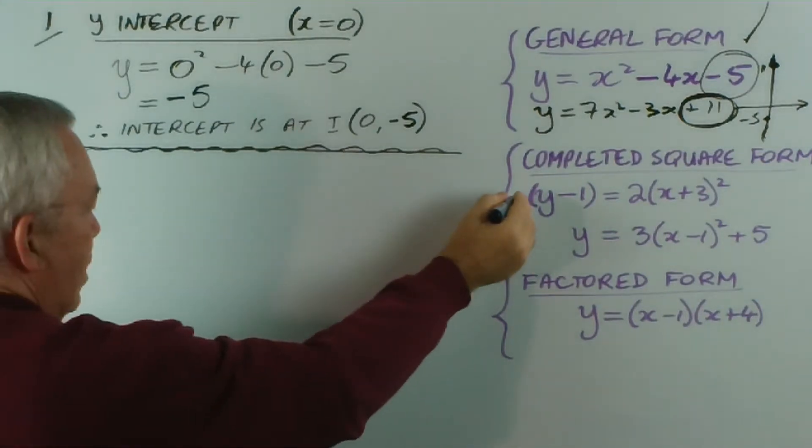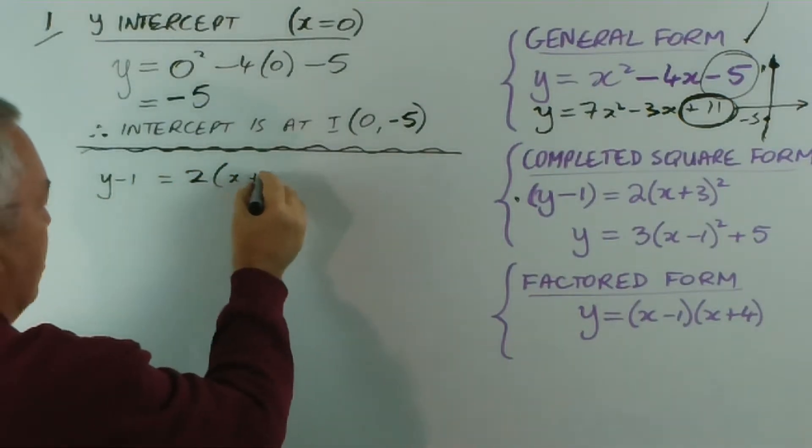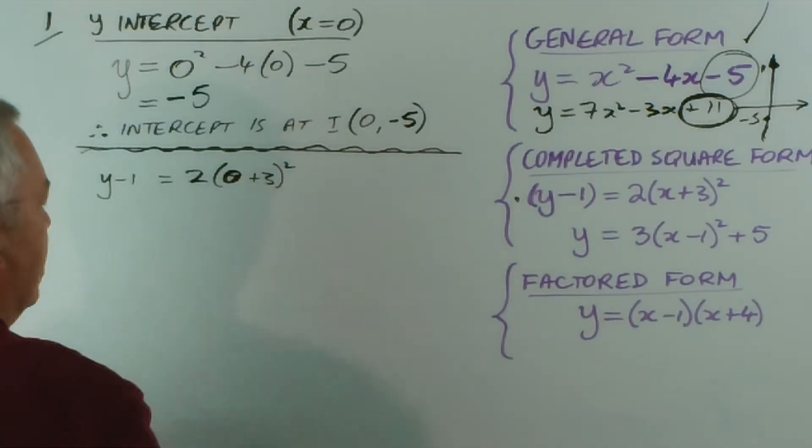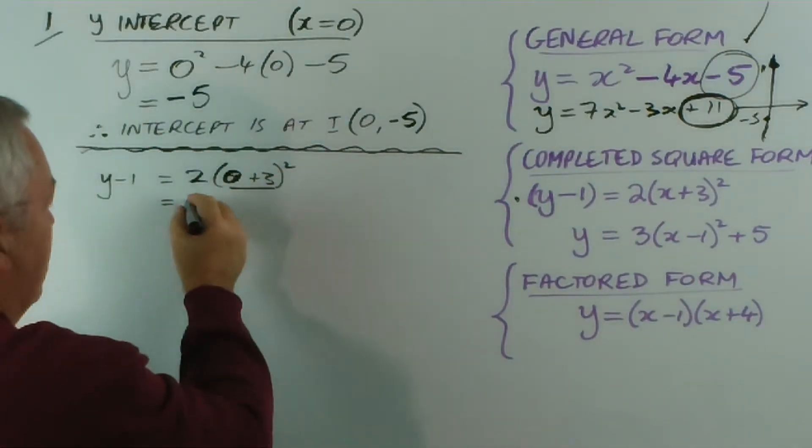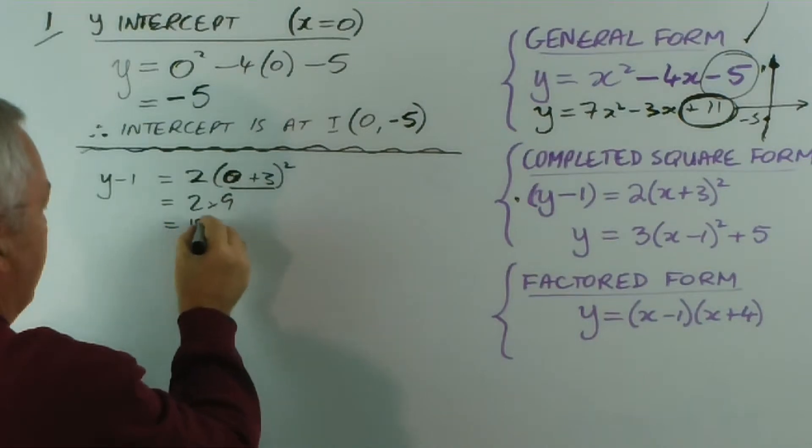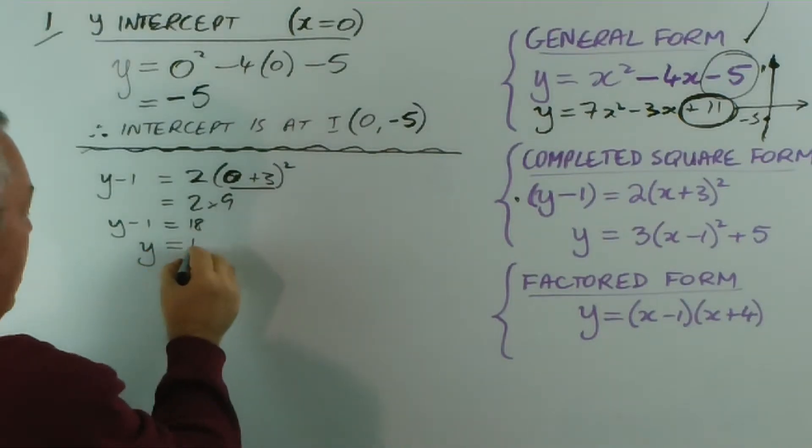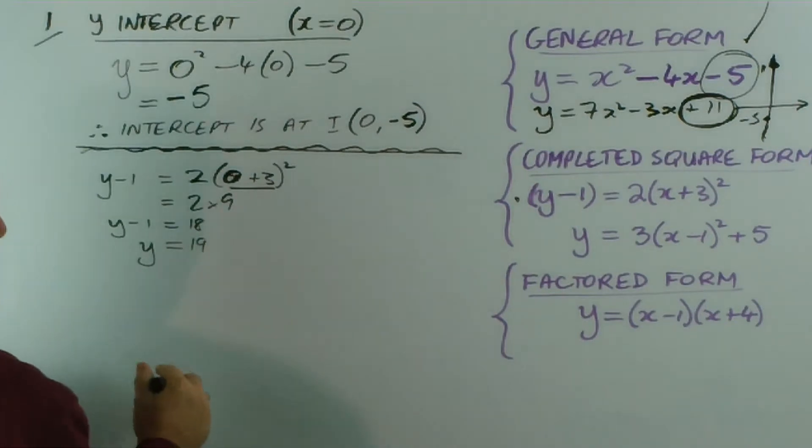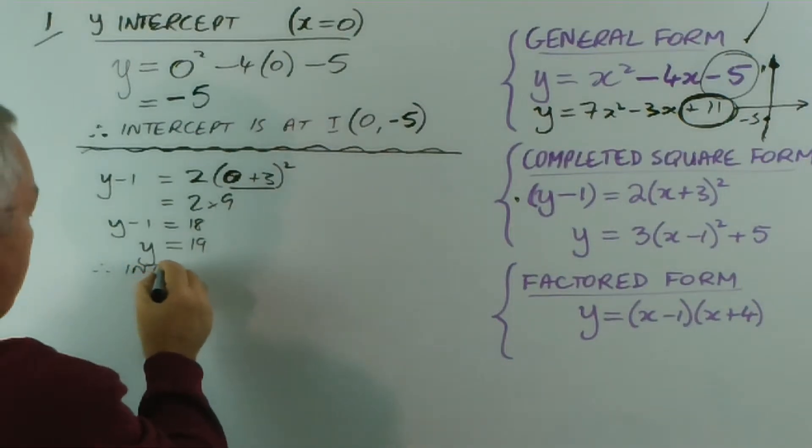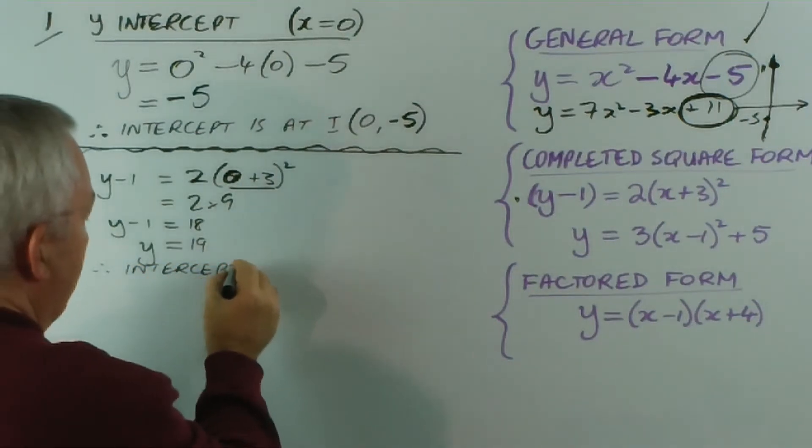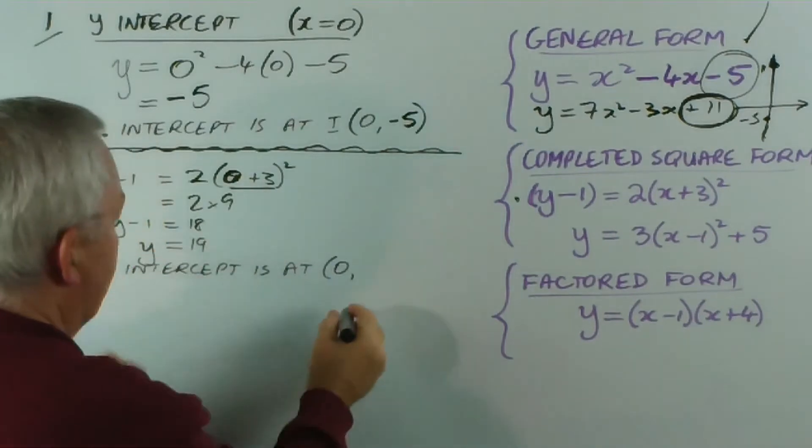If we substitute x equals zero in these, in the first occasion, this one, we will get y minus one is two lots of zero plus three squared. Zero plus three of course is worth three. Three squared is nine, which is eighteen. And since y minus one is eighteen, we have to add one to both sides and get nineteen. So in this case the intercept would be way up the y-axis, and this time the y goes at 19.